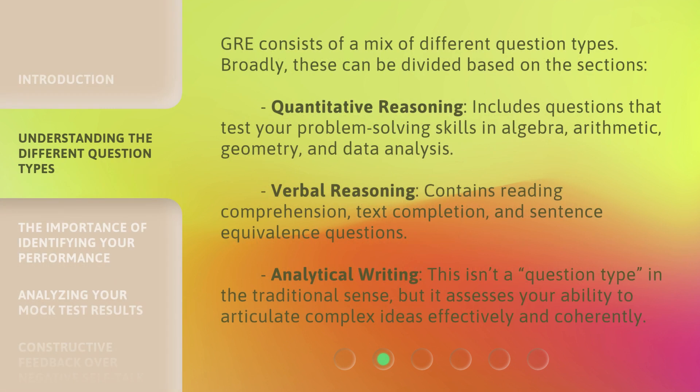The GRE consists of a mix of different question types. Broadly, these can be divided based on the sections. Quantitative Reasoning includes questions that test your problem-solving skills in algebra, arithmetic, geometry, and data analysis. Verbal Reasoning contains reading comprehension, text completion, and sentence equivalence questions.